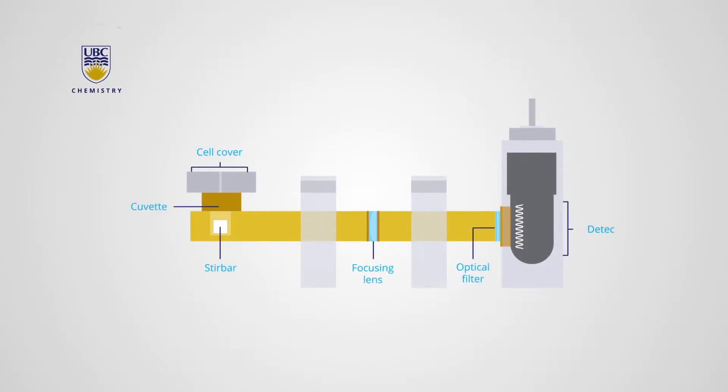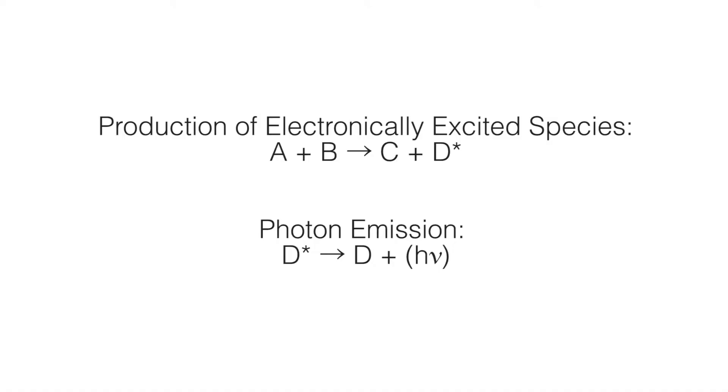a chemiluminescence reaction occurs, producing products that are in the excited state. When the molecules relax back down to the ground state, photons are emitted.